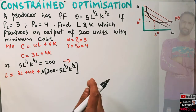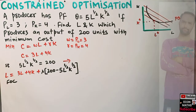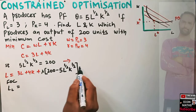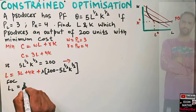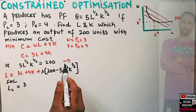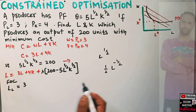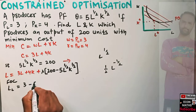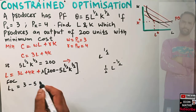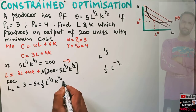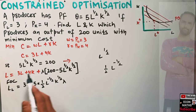The first-order condition for optimization means we take the partial derivative of the Lagrangian function with respect to labor, capital, and lambda, set each equal to zero, and solve simultaneously. Taking the partial derivative with respect to labor: derivative of 3L gives 3, and the derivative of the constraint term gives −λ × (5/2) × L^(−1/2) × K^(1/2). Setting this equal to zero gives us the first equation.